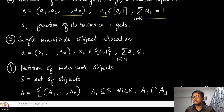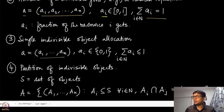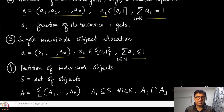You can also think about a single indivisible object allocation. Unlike the divisible case, either you give the whole object to someone or you do not give that object to an agent at all. In that case, the vector structure remains the same, but each a_i can only take integral values — either 0 or 1 — and the sum of the a_i's should be less than or equal to 1, which also allows the possibility that the item is not allocated at all.